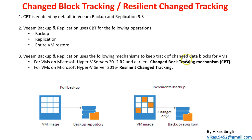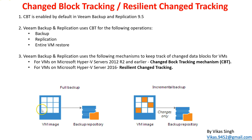Veeam uses the following mechanisms to track data changes. For Microsoft Hyper-V servers 2012 R2 or earlier, CBT (Change Block Tracking) is enabled by default. From Windows Server 2016 onwards, Microsoft introduced a new tracking system called RCT — Resilient Change Tracking — used for virtual machines running on Hyper-V 2016. The full backup runs on the backup repository, and for incremental data, CBT identifies which blocks have changed, with only those changes backed up to the repository.